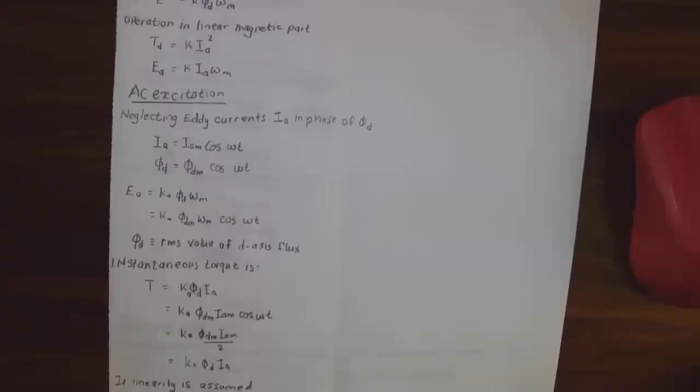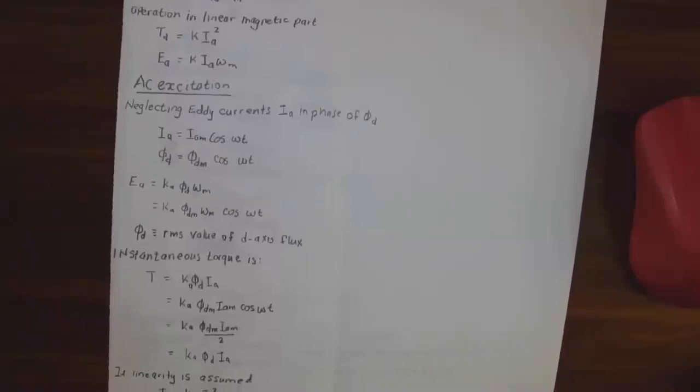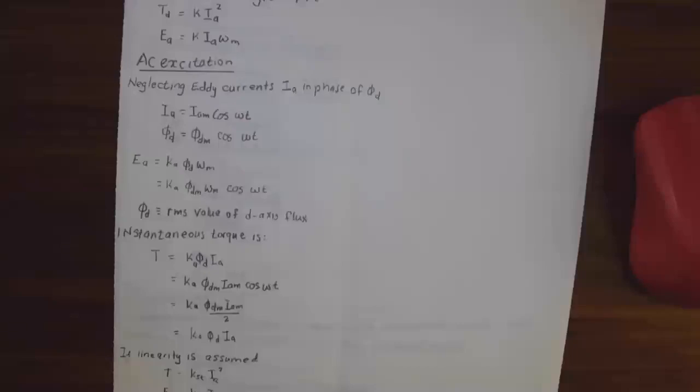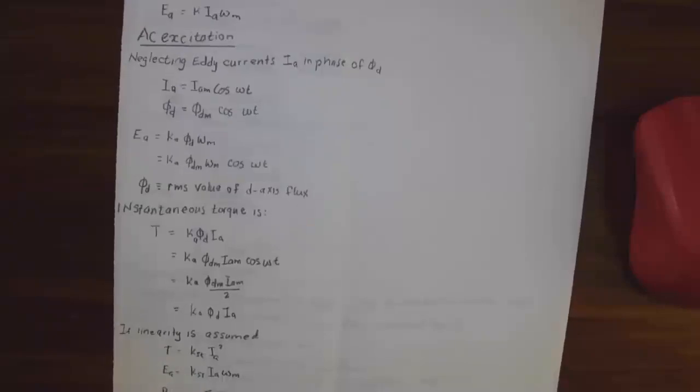For AC excitation we neglect any currents. I_a is in phase with phi d: I_a is I_max cos omega t, phi d is phi d max cos omega t. Then E_a is k phi d omega m, and we can substitute that back and get k phi d max omega m cos omega t. Phi d is the RMS value of the direct axis flux.